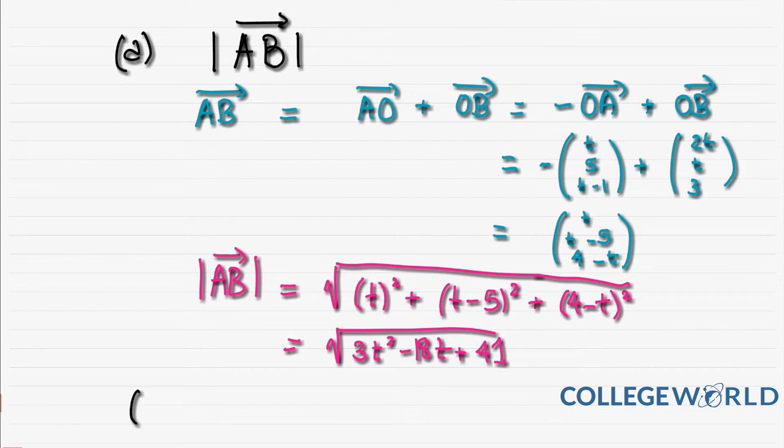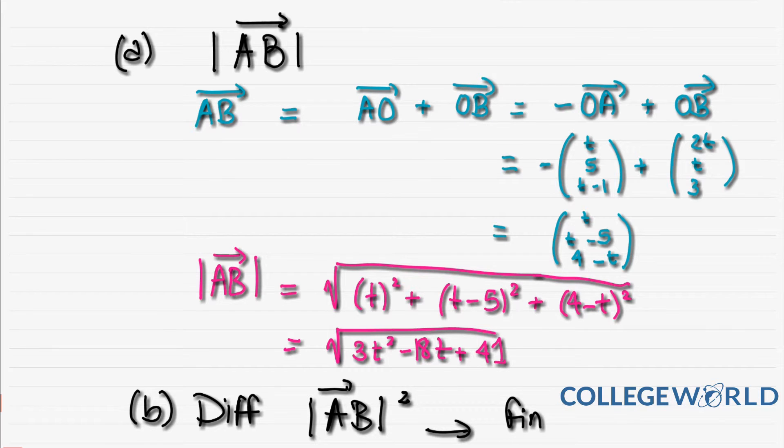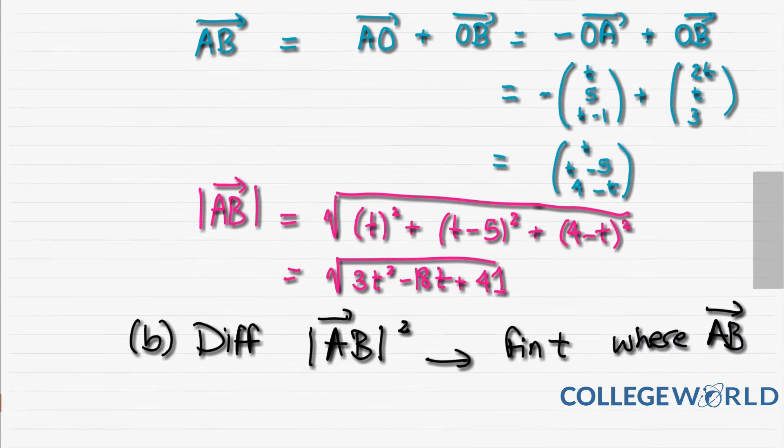The second part of the question asks you to differentiate the modulus of AB squared, and then find the value for t where AB is minimum. We're moving on to differentiation now. See how vectors can include other chapters. First, we need to differentiate |AB|².